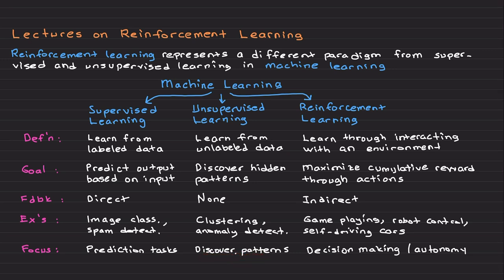In reinforcement learning, you learn through interacting with an environment and maximize a cumulative reward through actions. Feedback is indirect — unlike supervised learning, it won't tell you directly if your action is good or bad, but will provide a reward or penalty for you to improve your actions over time. Examples include game playing, and the core focus of reinforcement learning is decision making and autonomy.